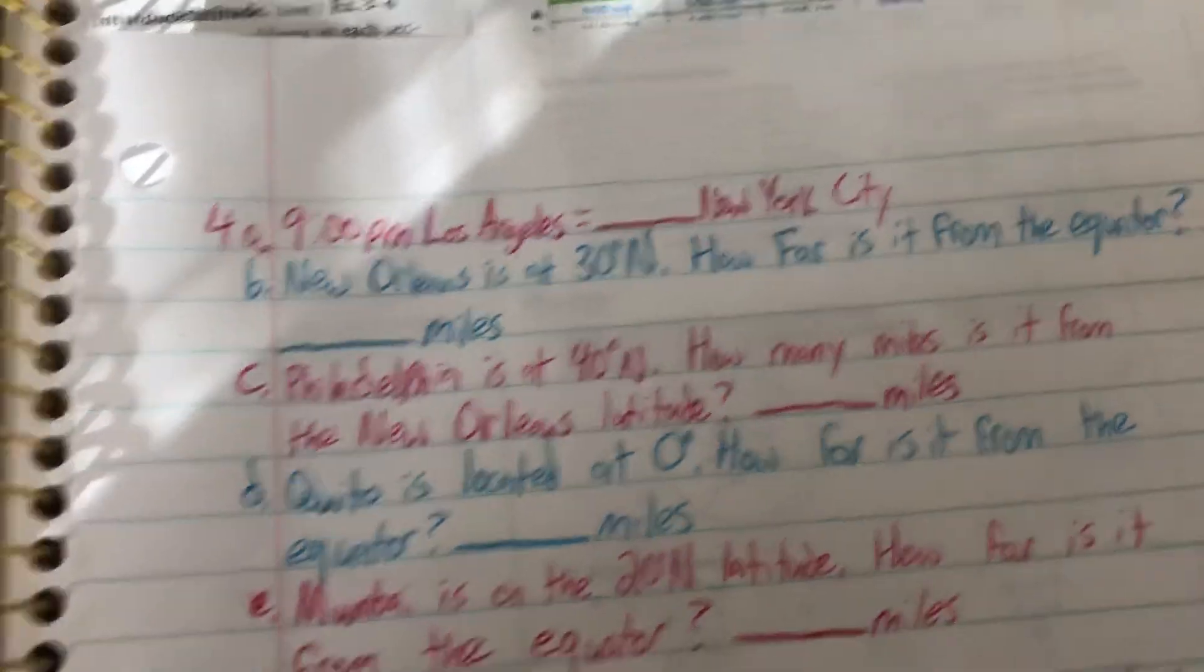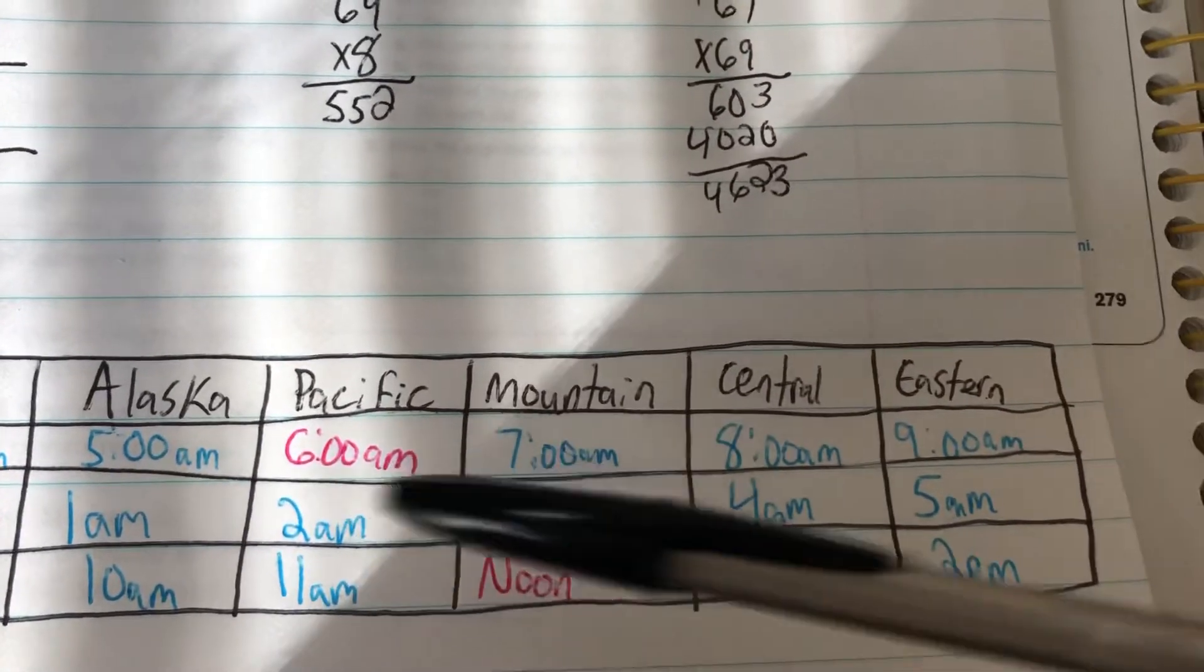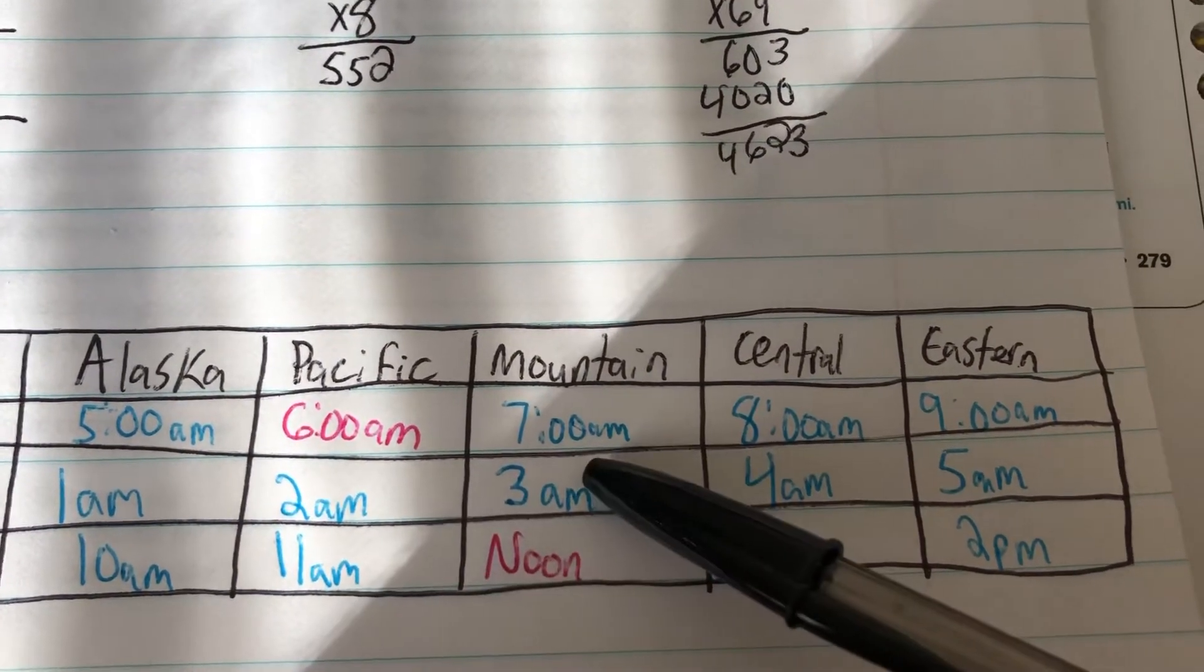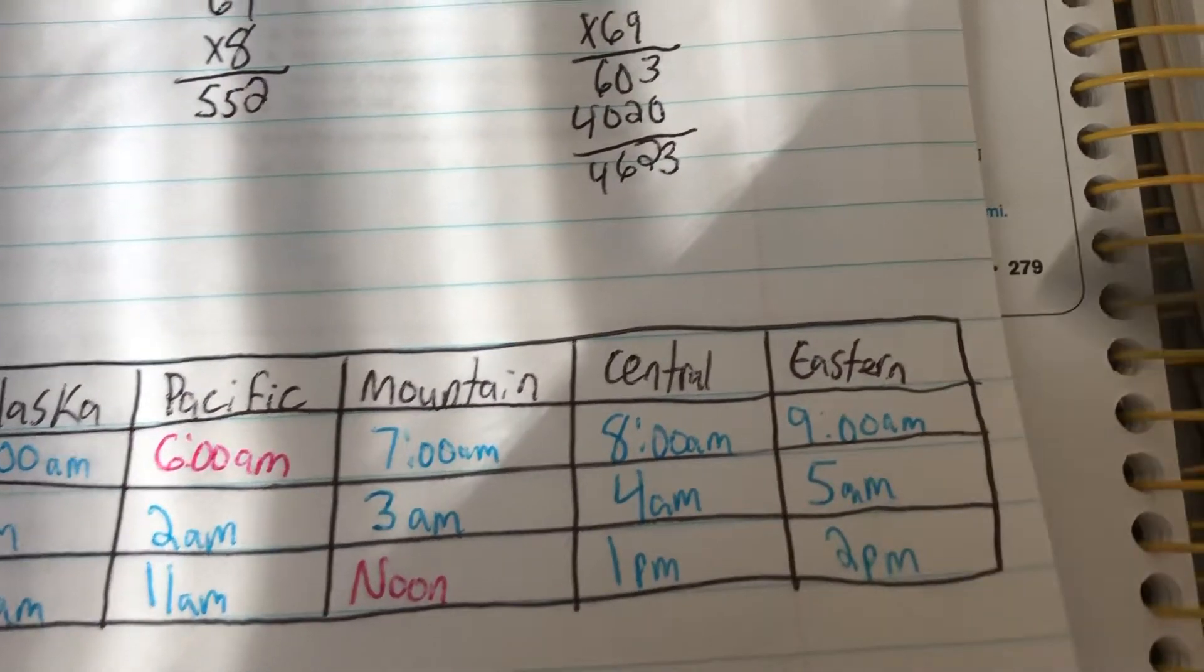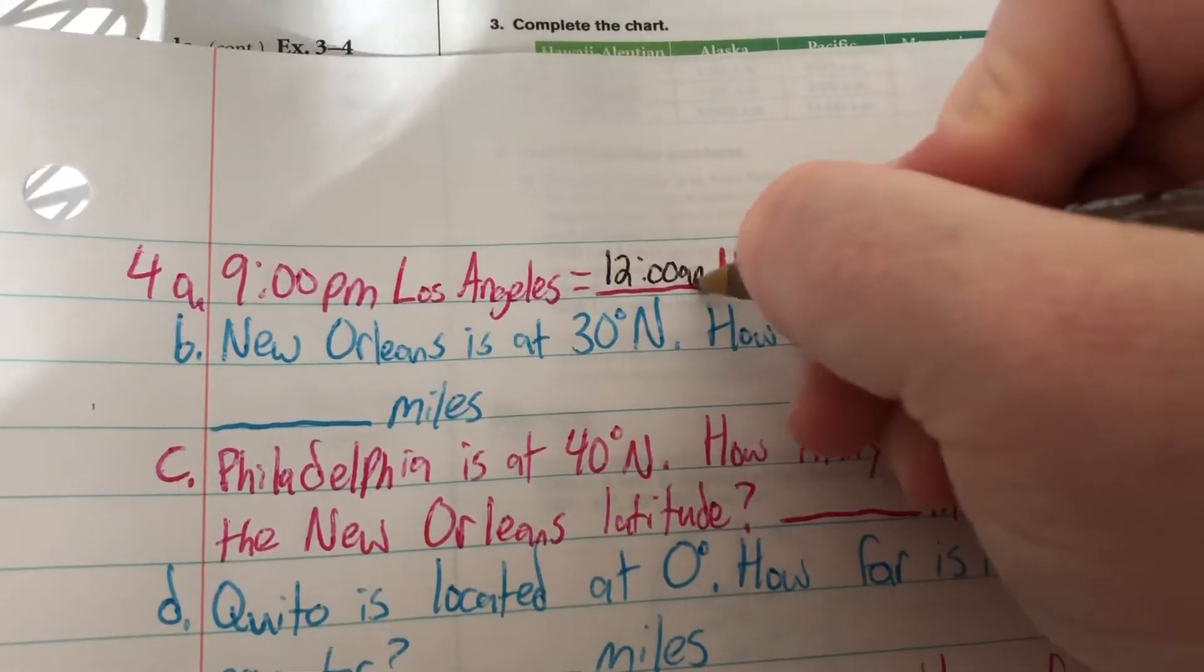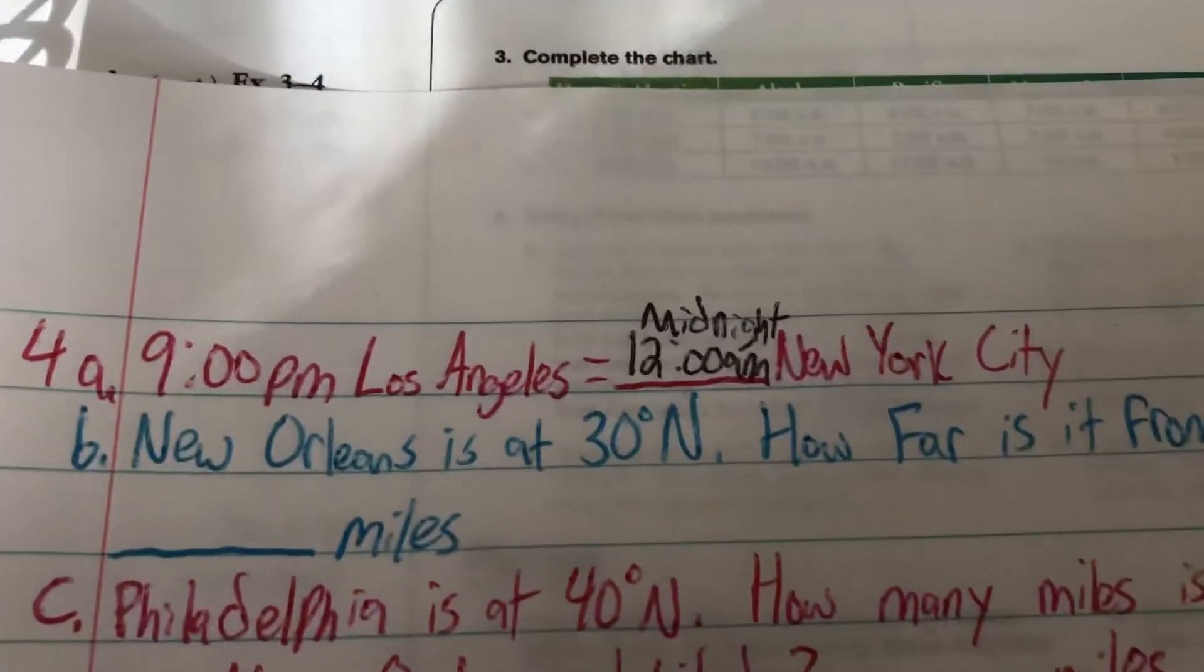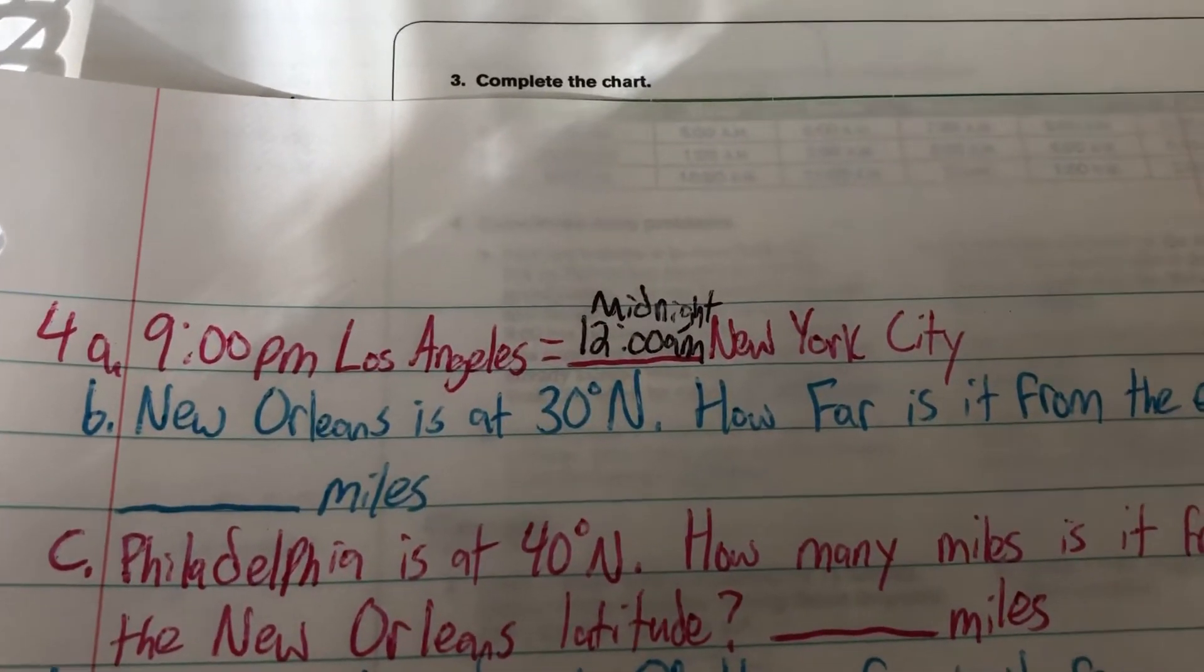9 p.m. in Los Angeles is what time in New York City? Well, Los Angeles is California, which would be the Pacific time zone. And New York City is in the eastern time zone. So if it is 9 p.m. here, 10 p.m., 11 p.m., midnight, or 12 a.m., I would take either. I would take 12 o'clock a.m. or midnight.